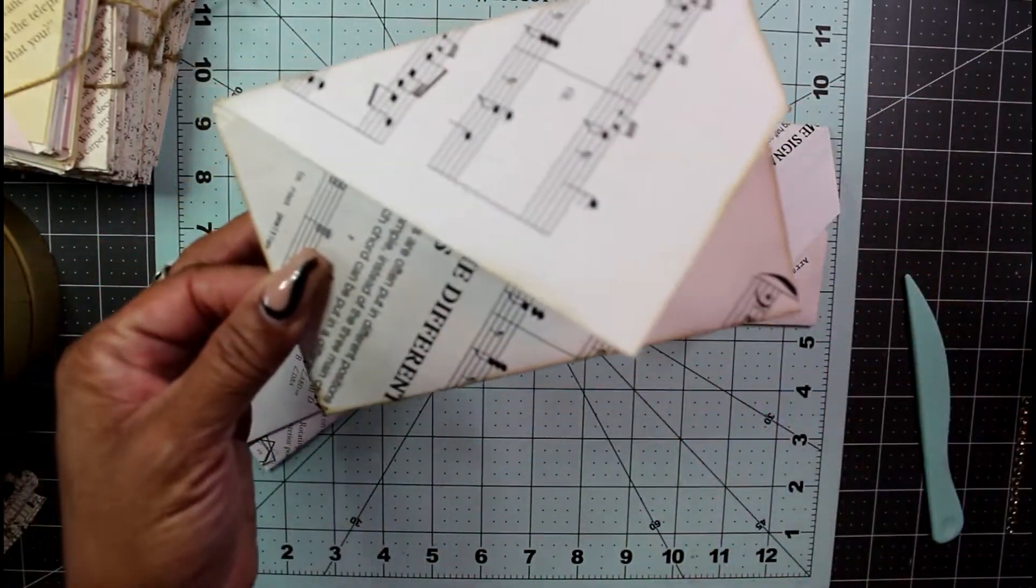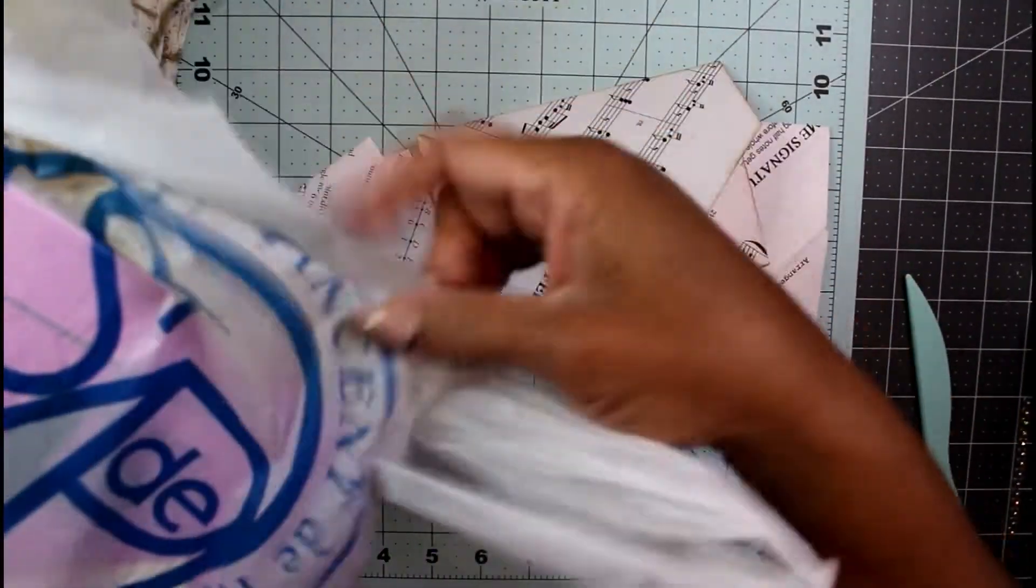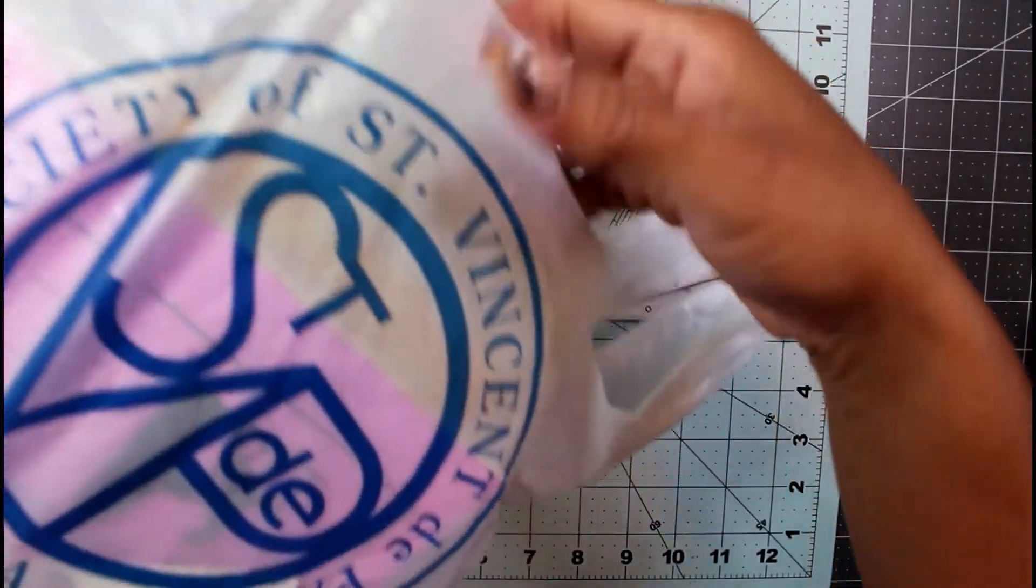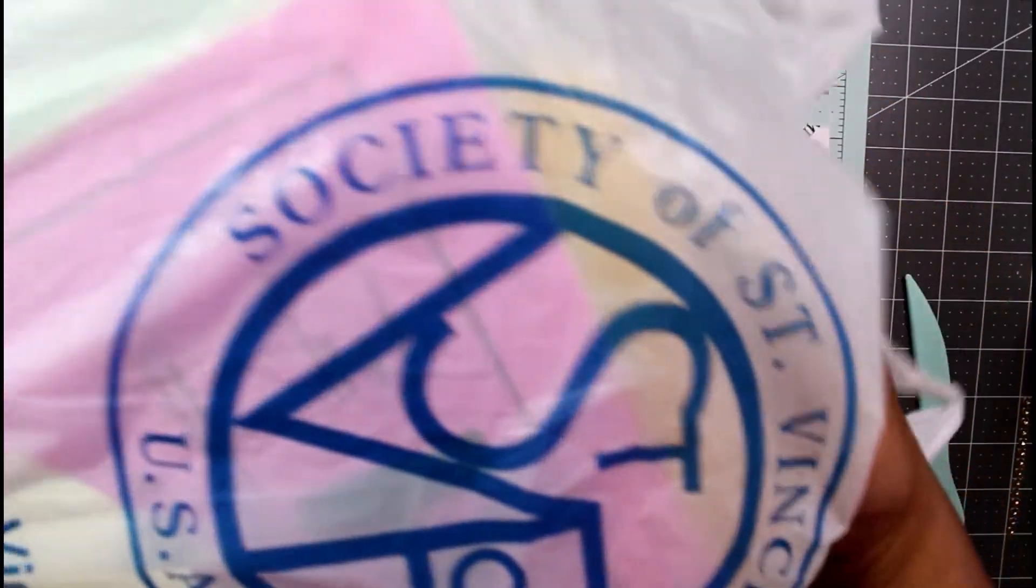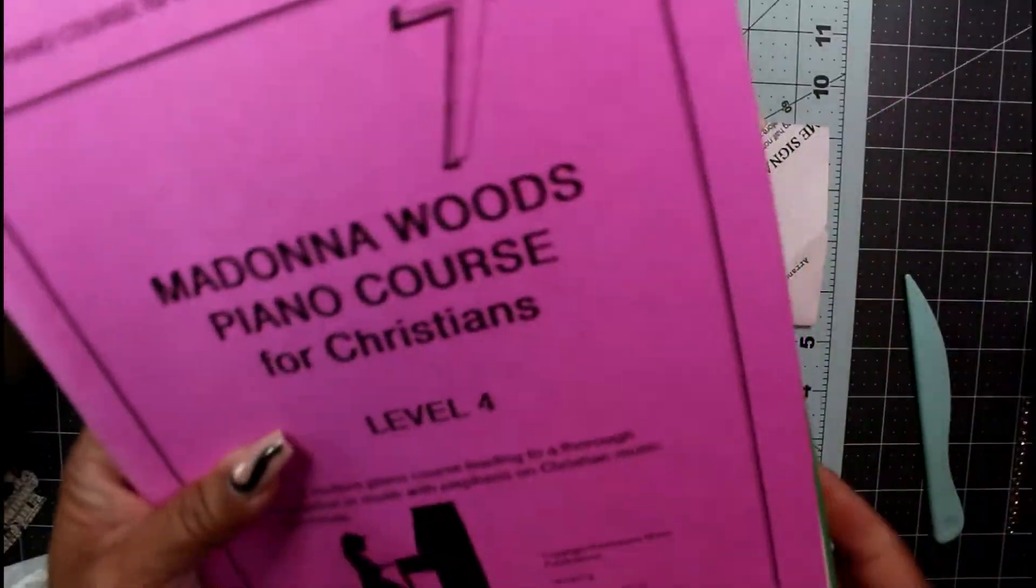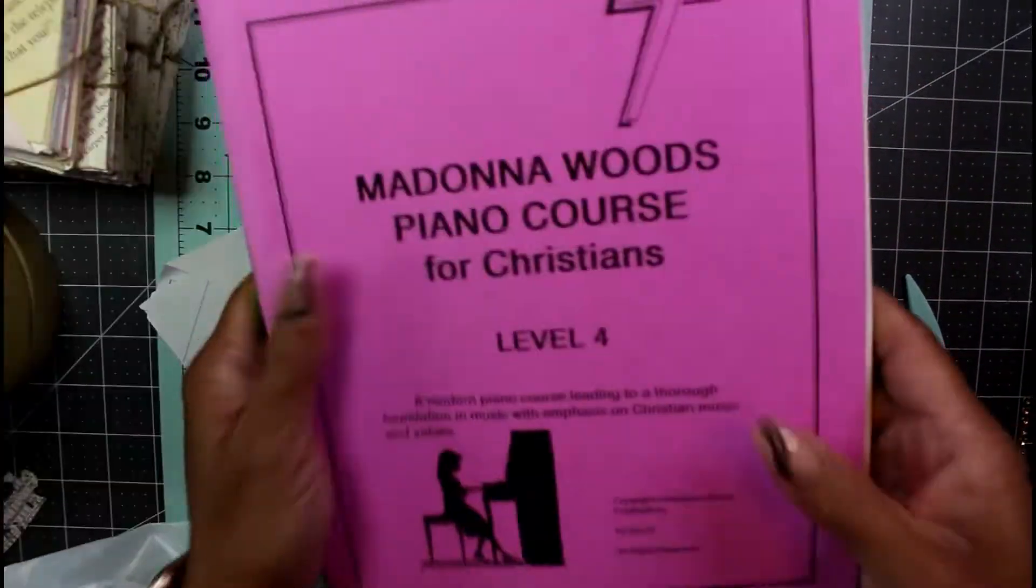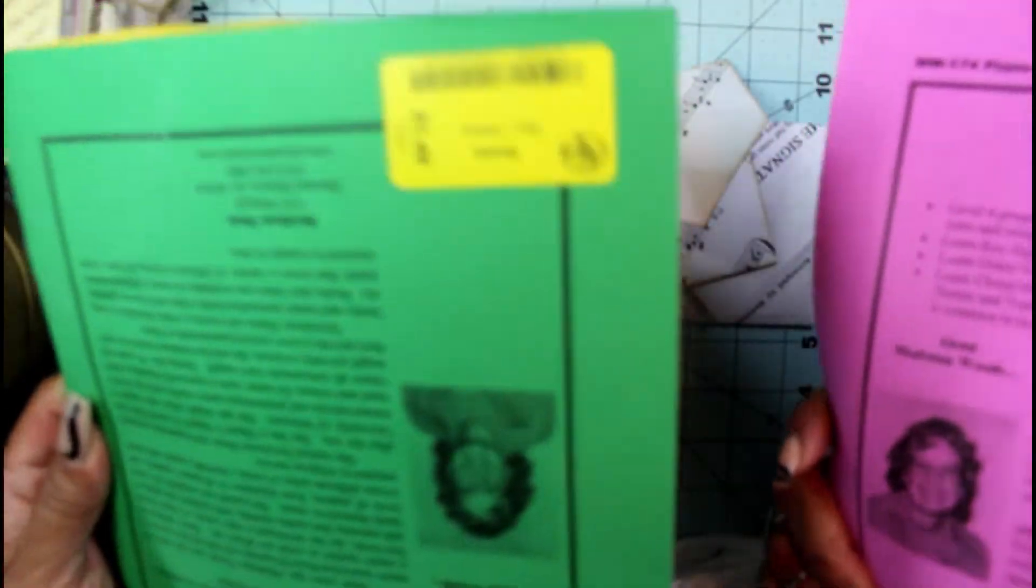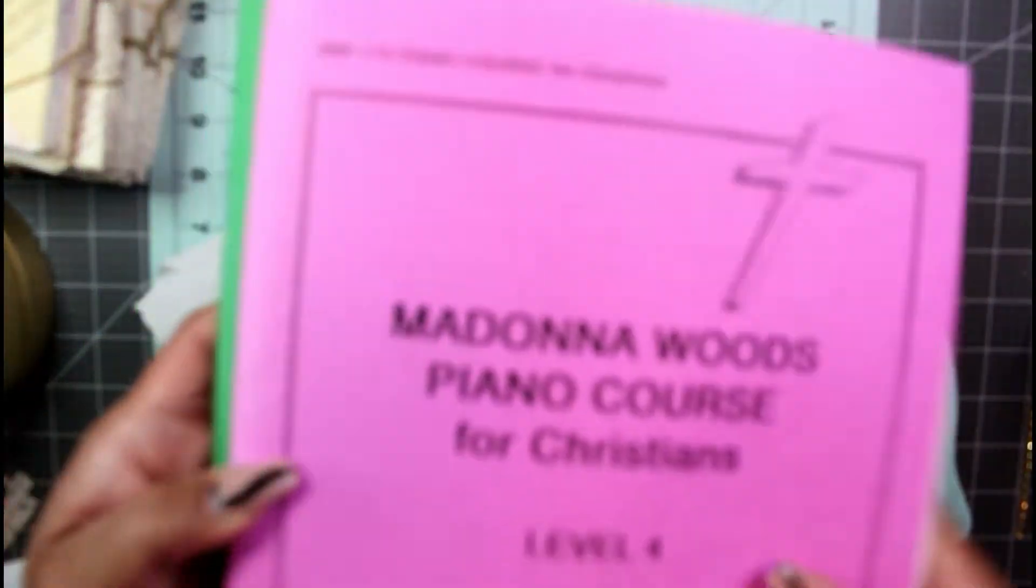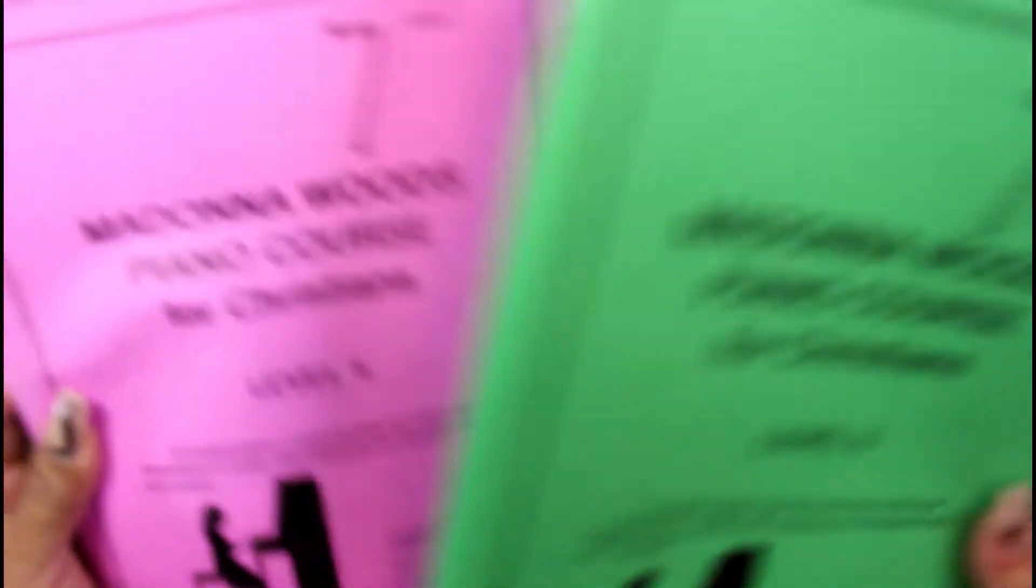I went to a thrift shop, Society of St. Vincent de Paul, and bought some of these old books, some music books. I think I paid $1.49 for them, so I'm really glad I found these. I took apart a couple of the pages right out of the center and started folding them up.